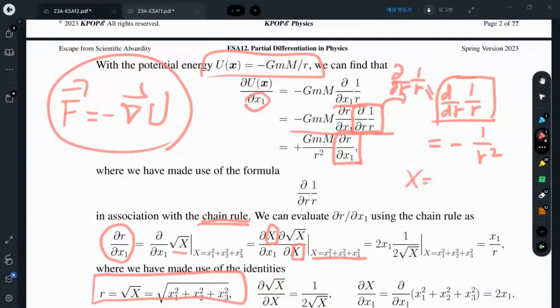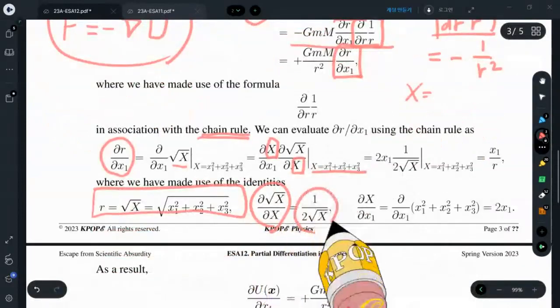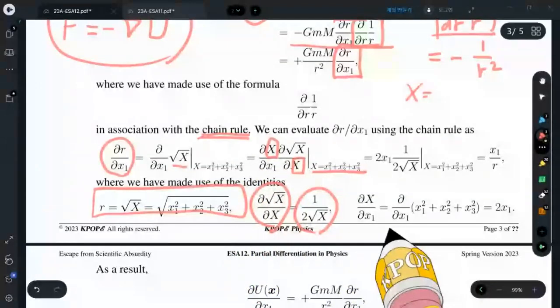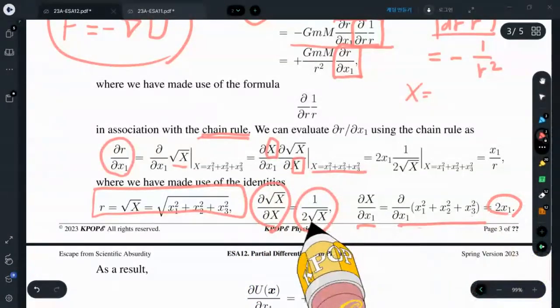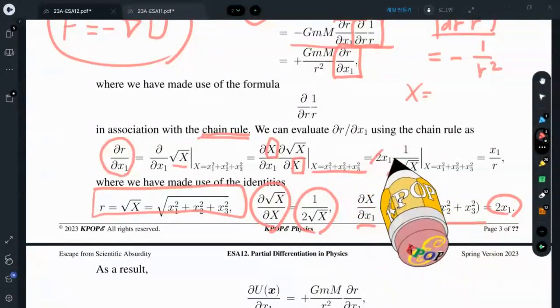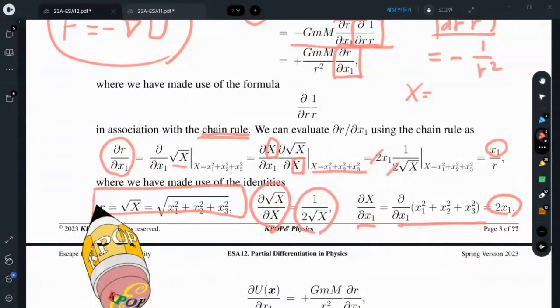We have a derivative table here. We know how to compute this derivative. And then this one is again trivial. This is 2x1. So 2, 2 cancels to find that we have x1 over r because the square root of X is r.